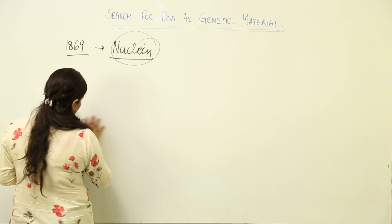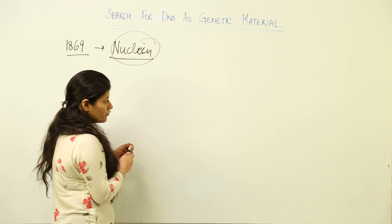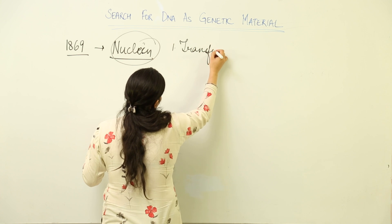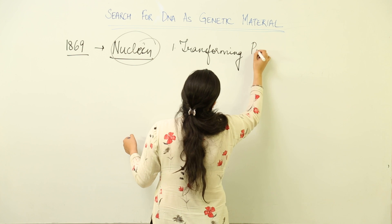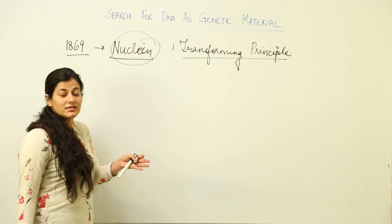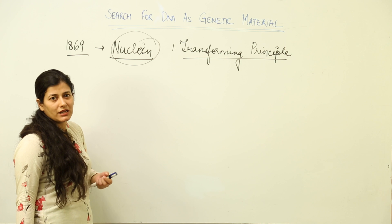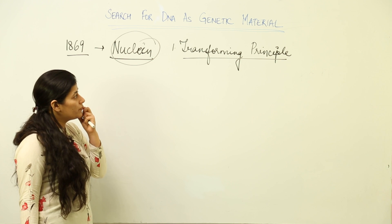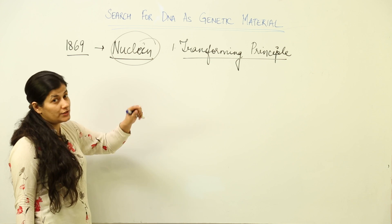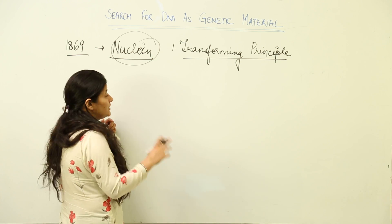We will look at a few experiments to understand how scientists finally concluded that DNA is the genetic material. The first experimental development in our syllabus is about the transforming principle. This inclination towards DNA as the genetic material started in the 1920s, with a close competition between proteins and DNA. We will see how that confusion was resolved and how unequivocal proof finally confirmed that DNA is the genetic material.